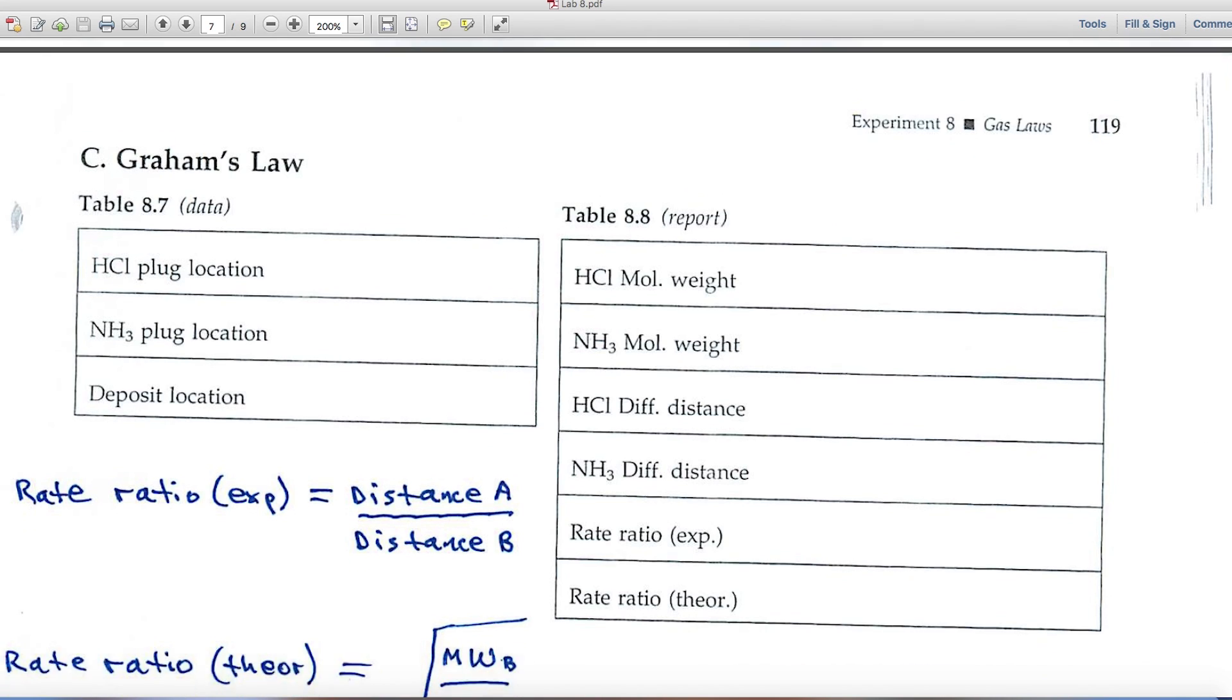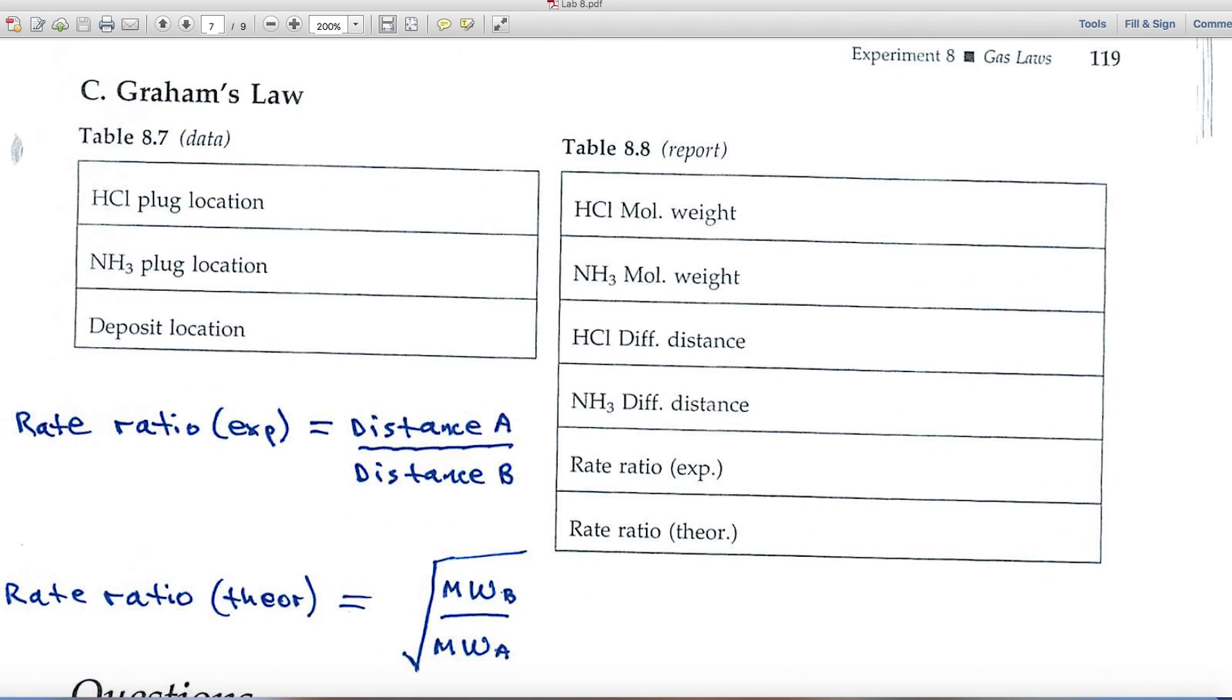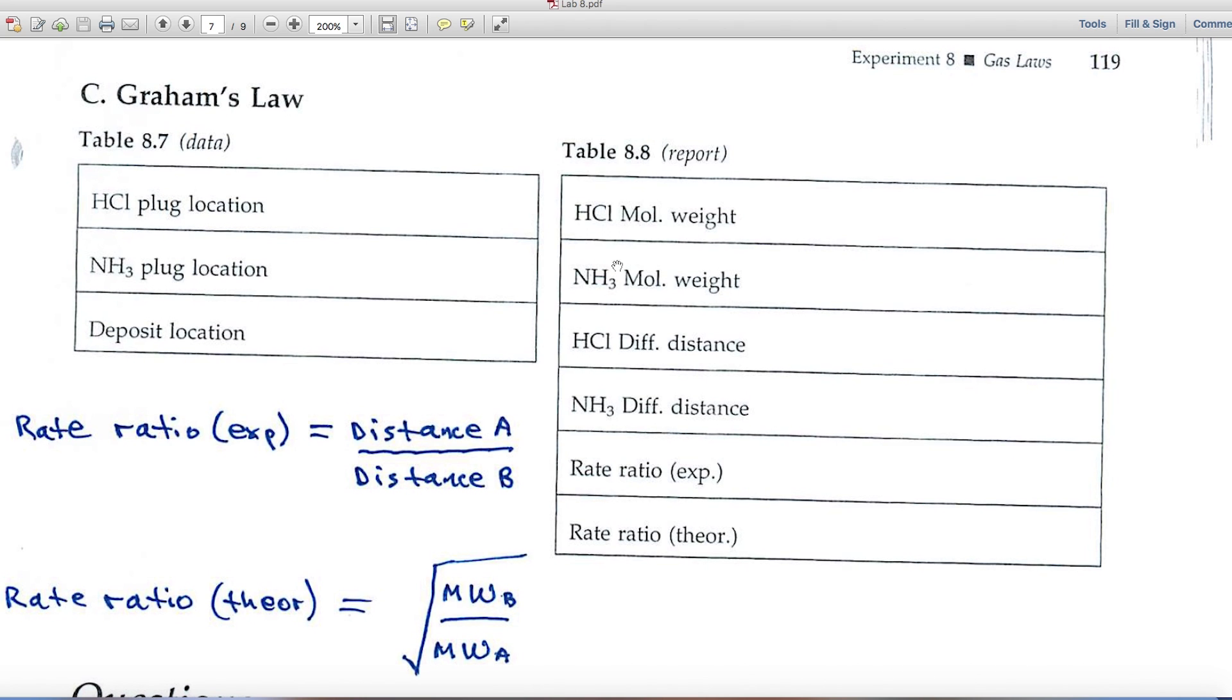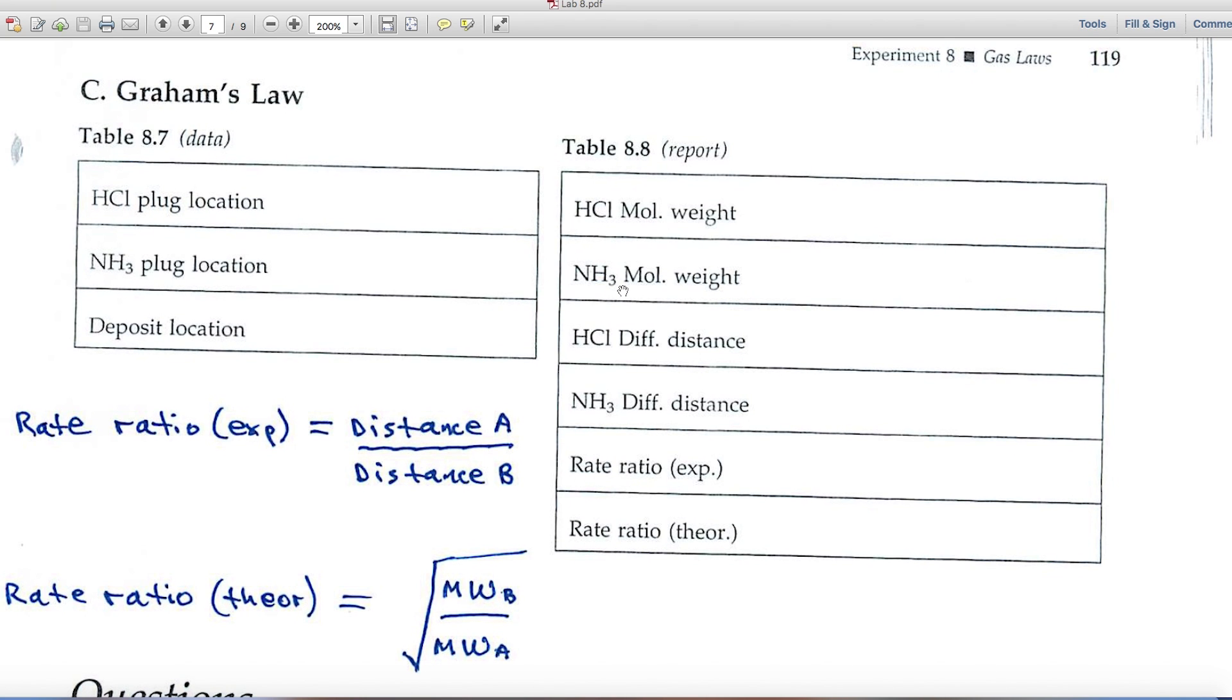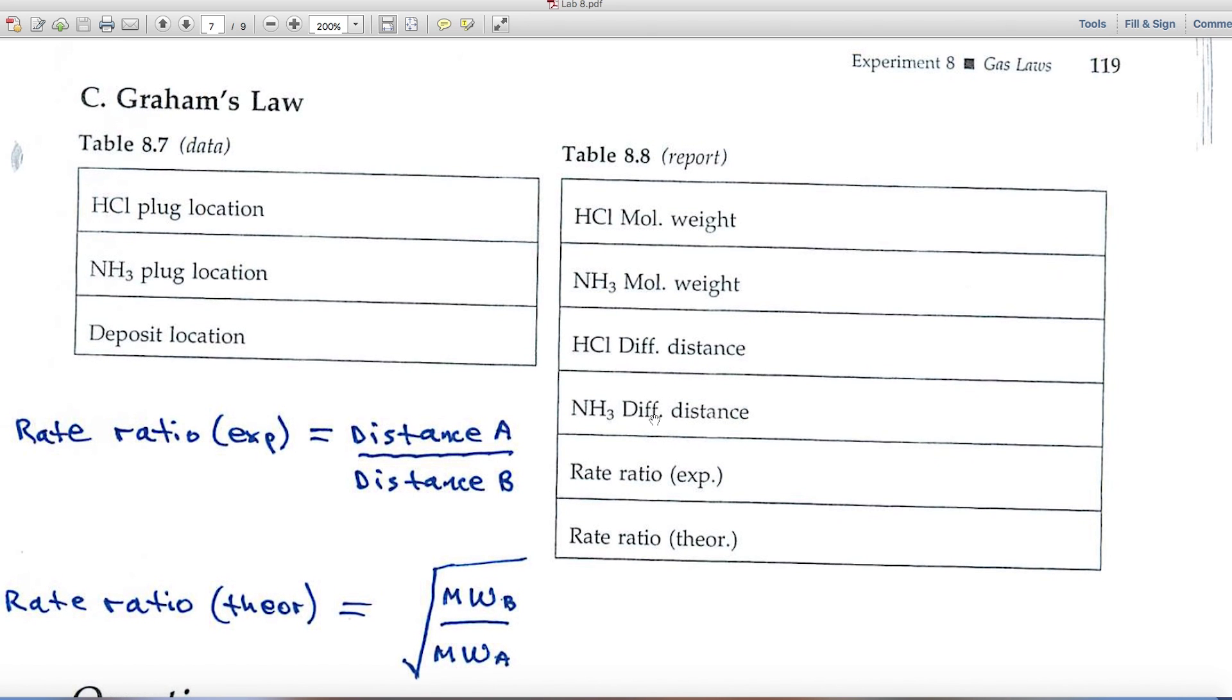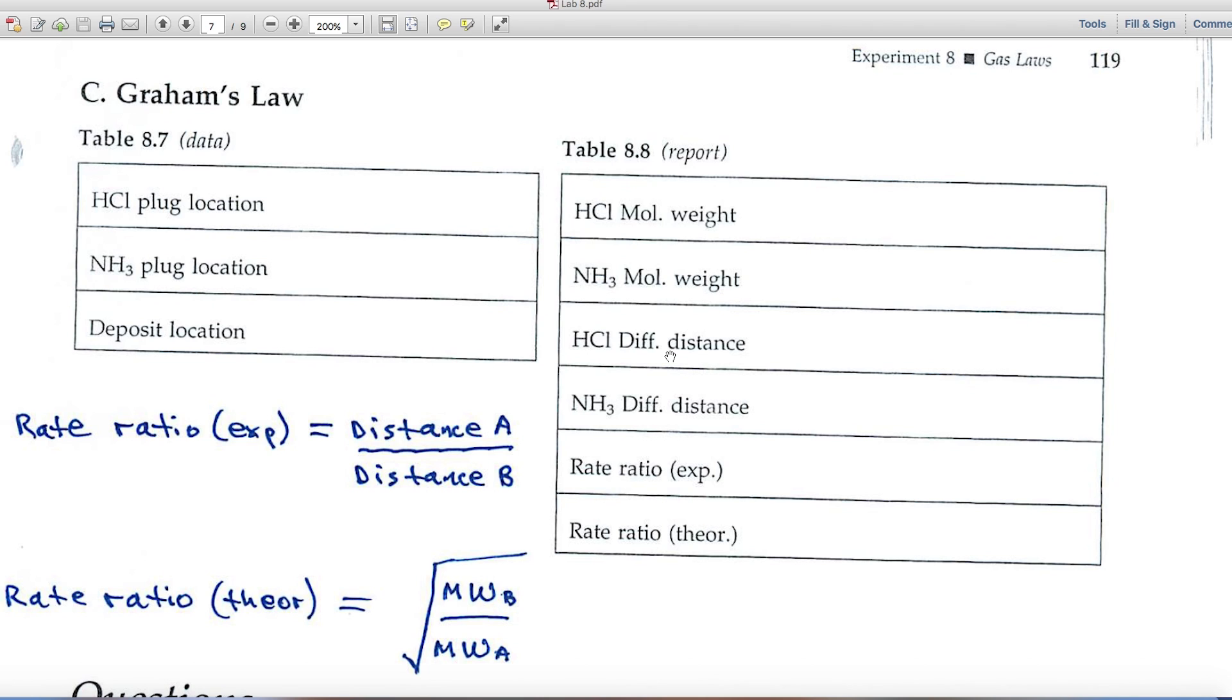Part C deals with Graham's Law. And you'll be calculating the molecular weight of HCl. You use the periodic table to do that. Same thing here with ammonia. Use the periodic table. These two distances, you'll get from the photographs, right here in this data.